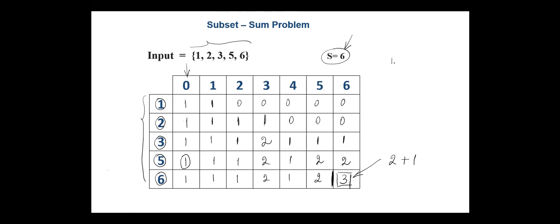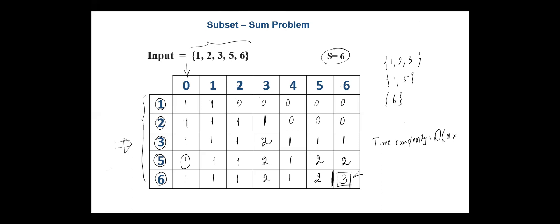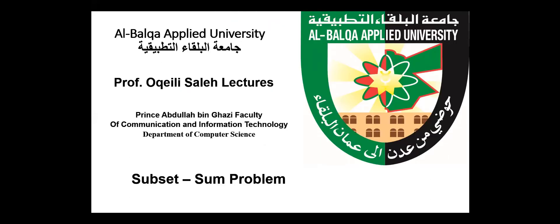The three subsets are {1, 2, 3}, {1, 5}, and {6}. The time complexity of solving the subset sum problem using dynamic programming is O(n times m), where n is the size of the input list and m is the required sum. There is also a space complexity of O(n times m), which is required for constructing the table. The main task in dynamic programming is to fill the table entries. The subset sum problem can also be solved using backtracking.